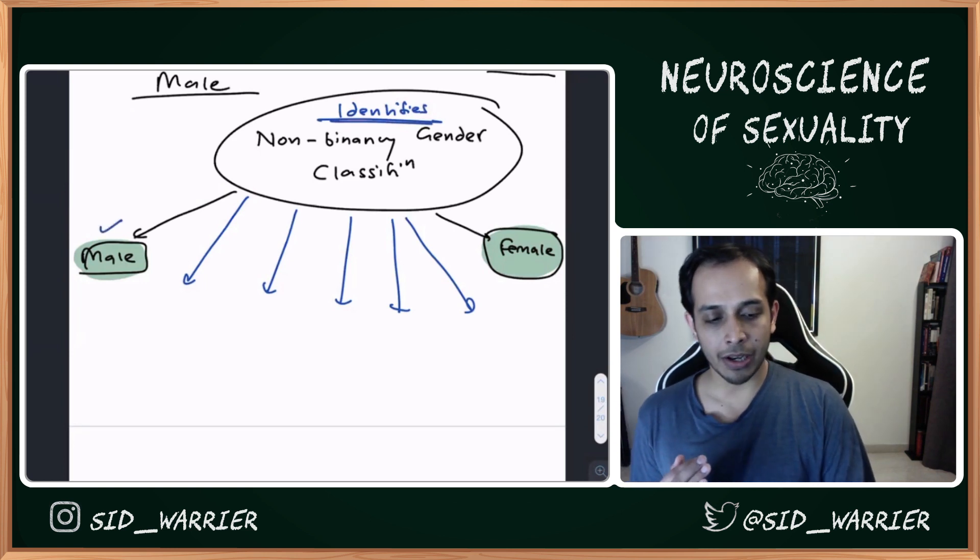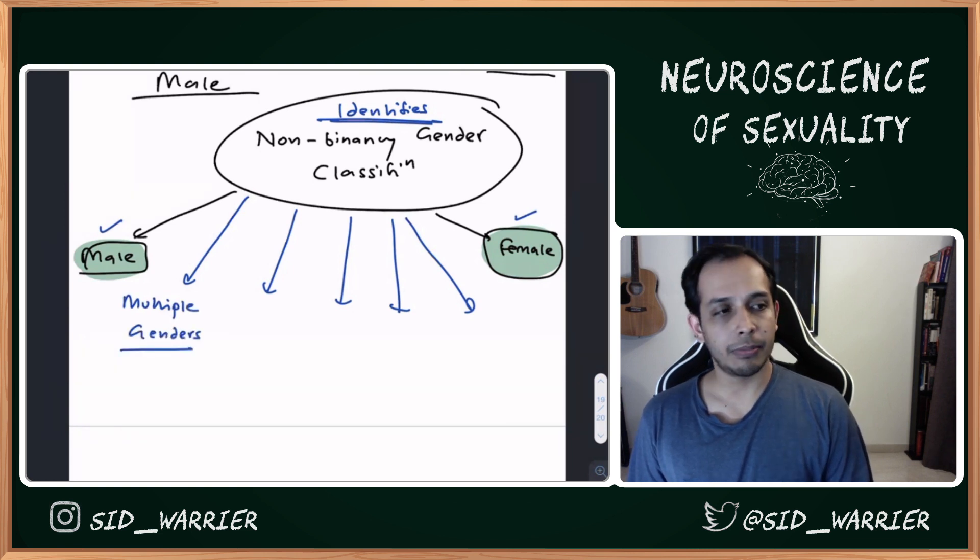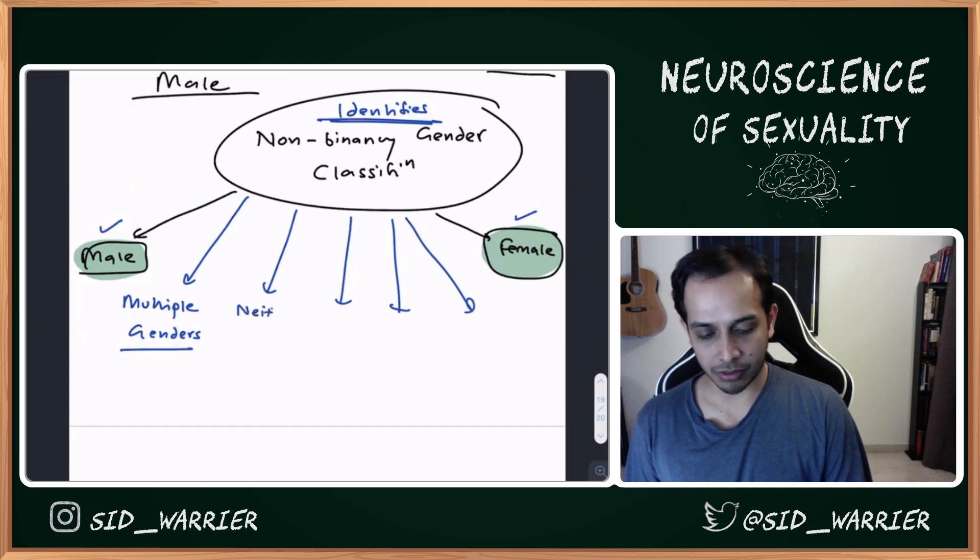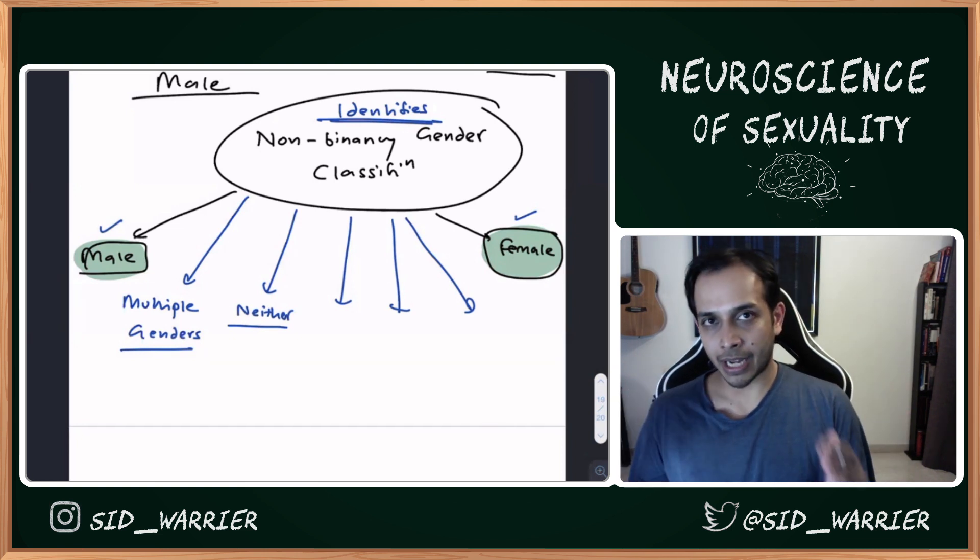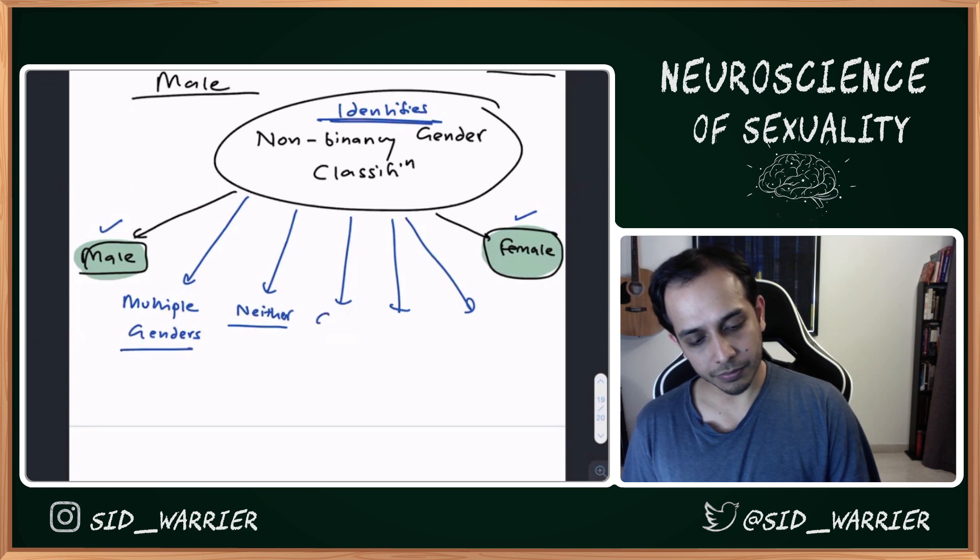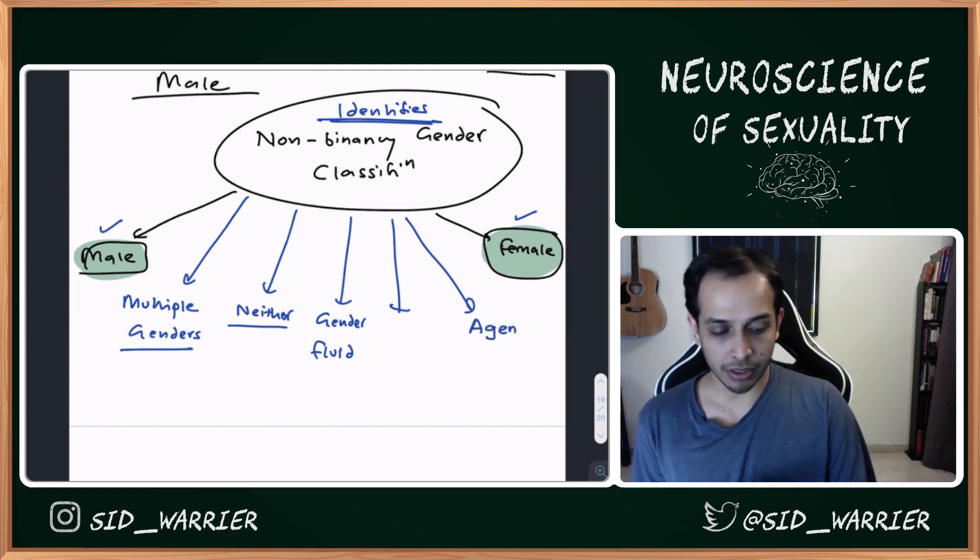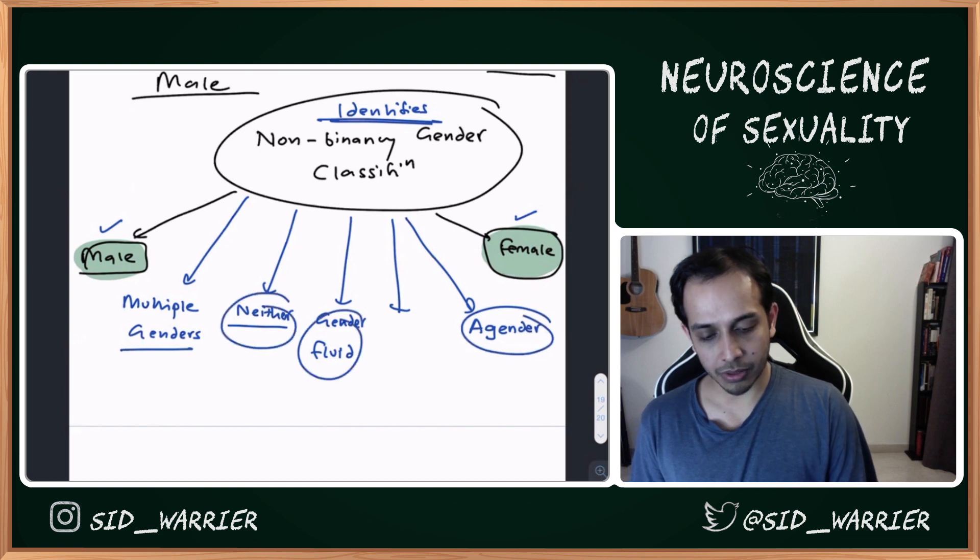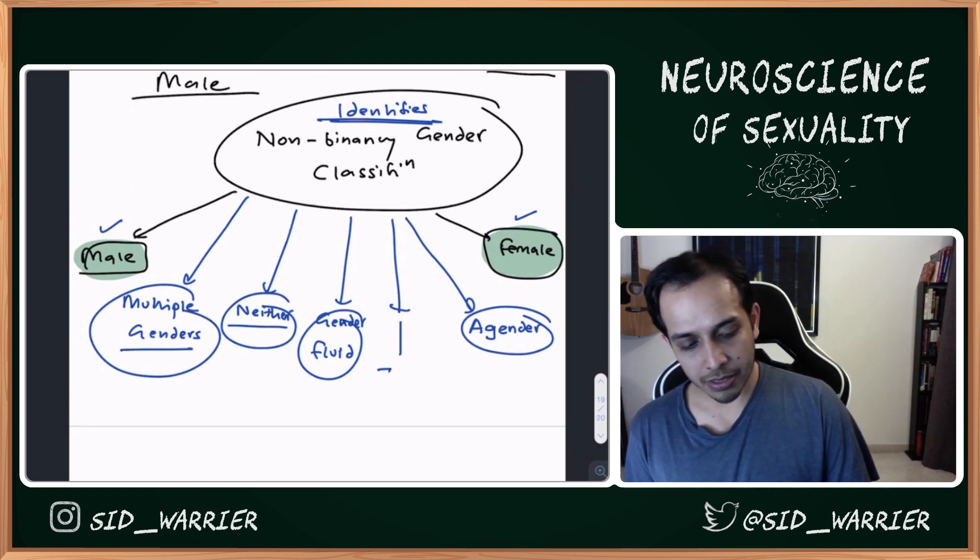Somebody identifies as either male or female, or somebody can identify as multiple genders. Somebody can identify as neither male nor female - they won't say what they are, they'll just say I am neither male nor female. They could have both, which is called fluid or gender fluid, or they could have no gender, which is agender. One of the common terms to use for all of this is transgender.